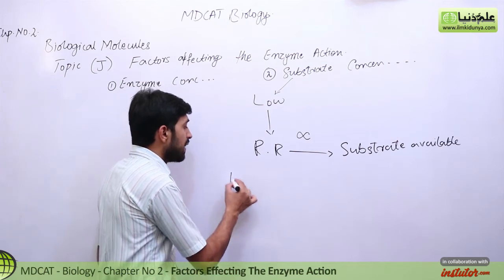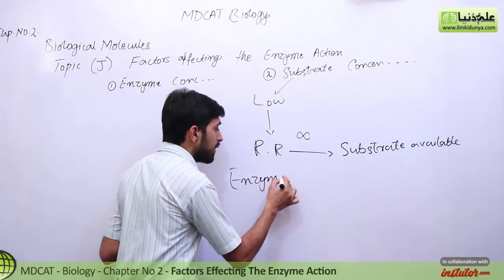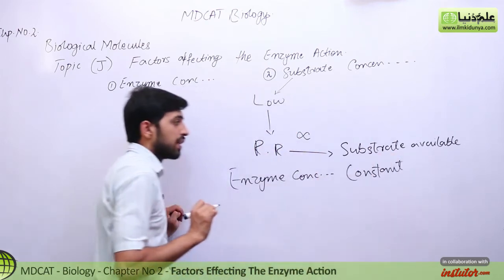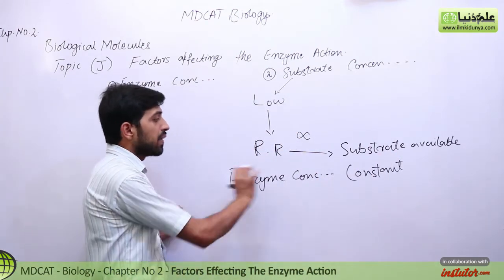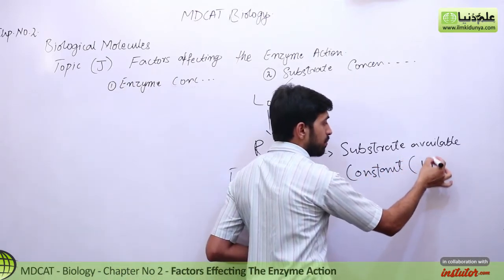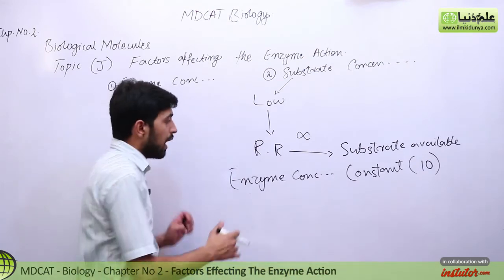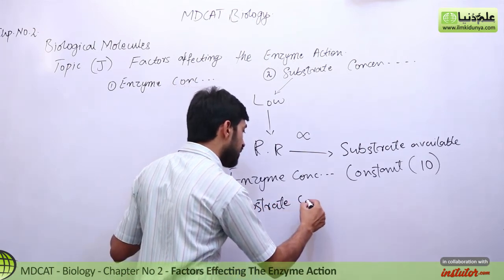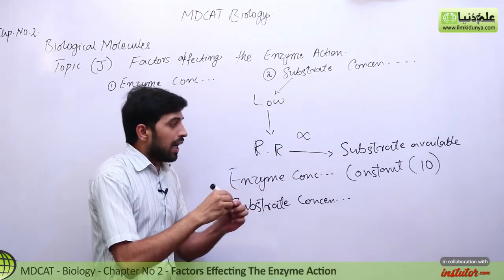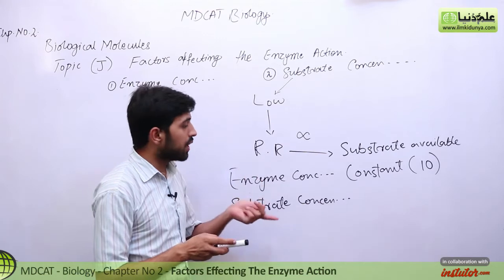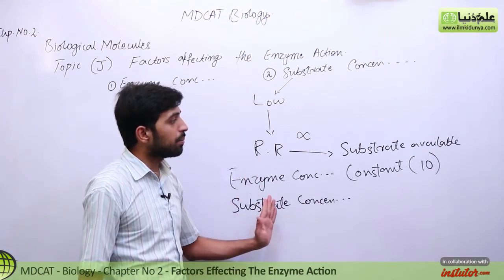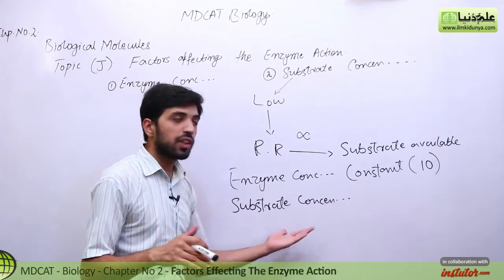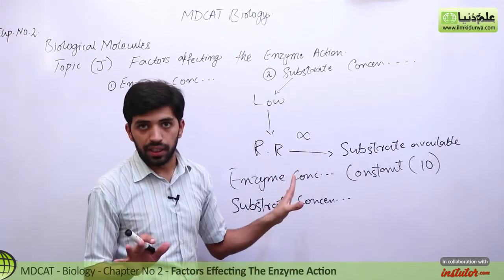For example, keep enzyme concentration constant — say, at 10. Now increase the substrate concentration. As the substrate concentration increases, the reaction rate increases. But a specific limit will come: when we increase the substrate concentration even a little beyond that point, the reaction rate will not increase further — it will stop there.